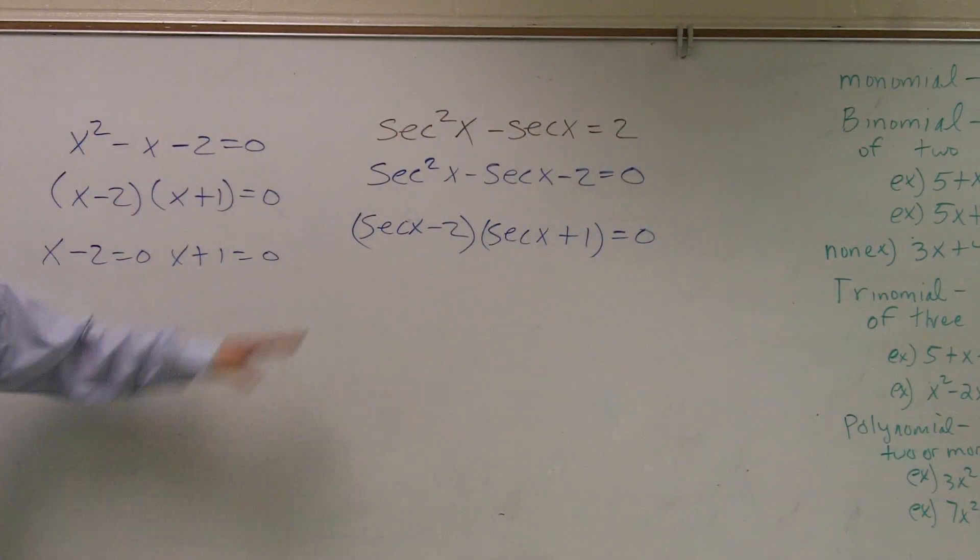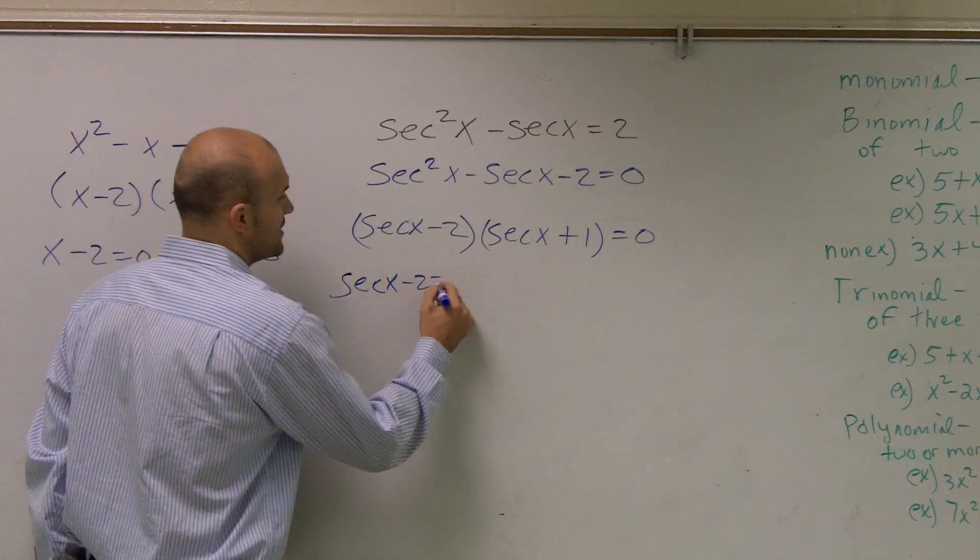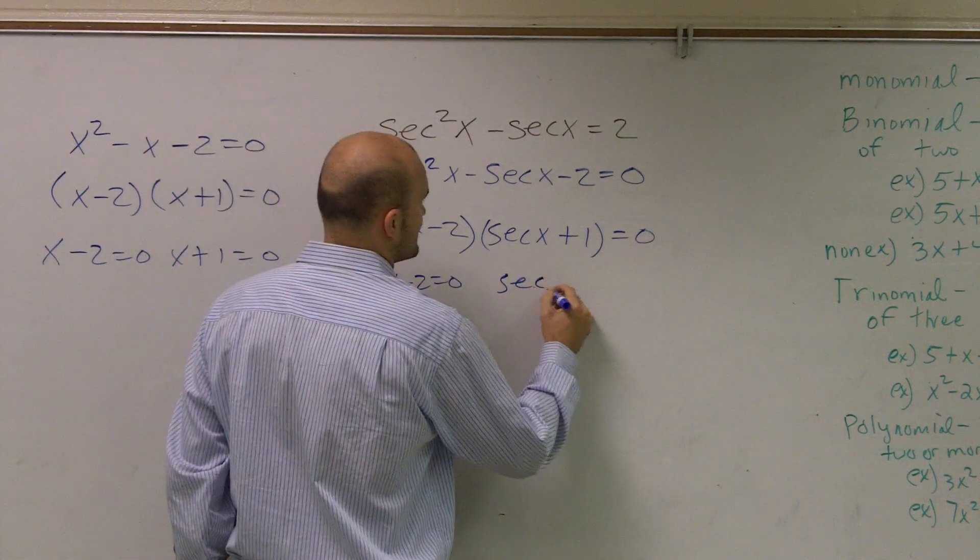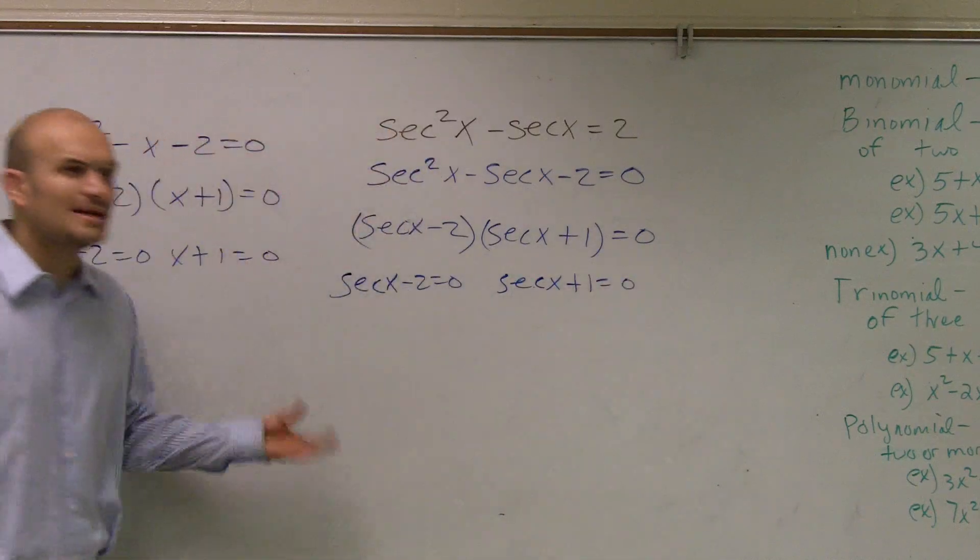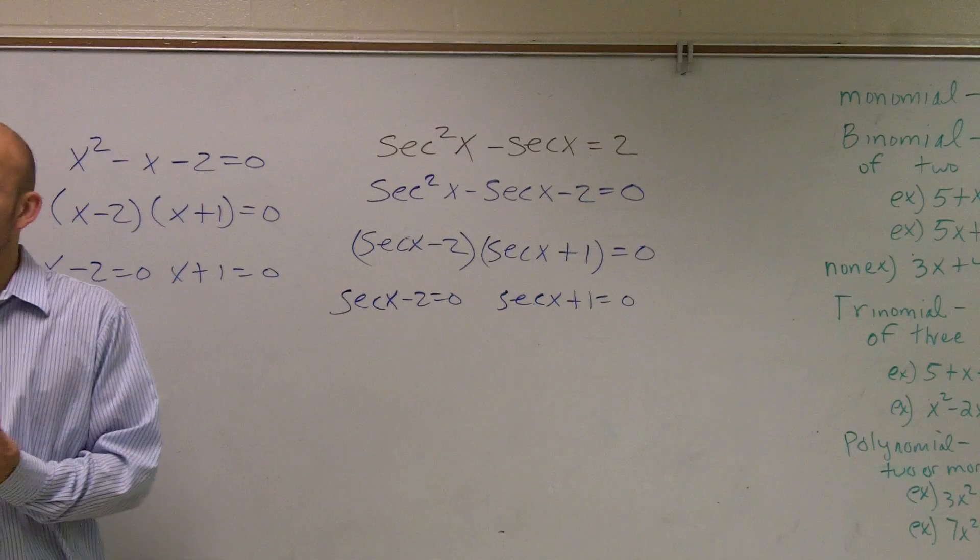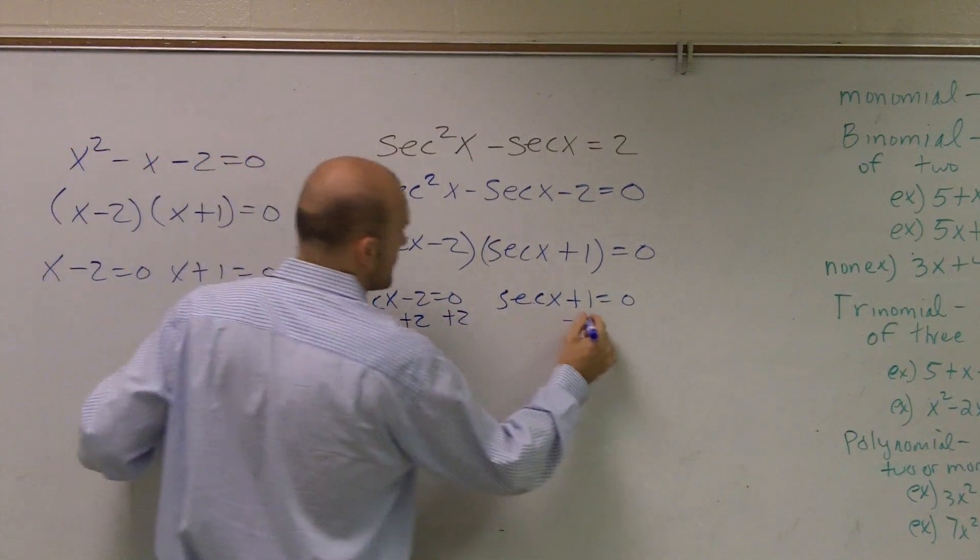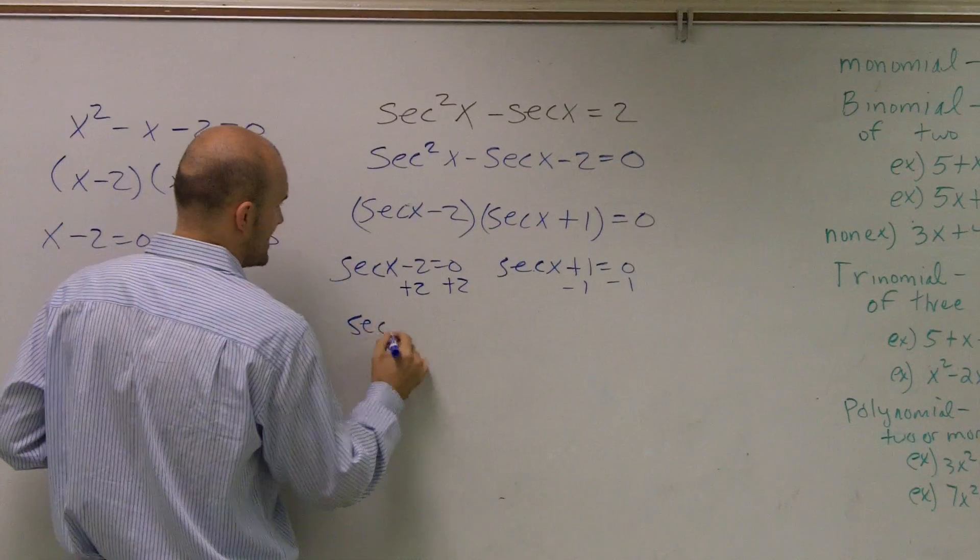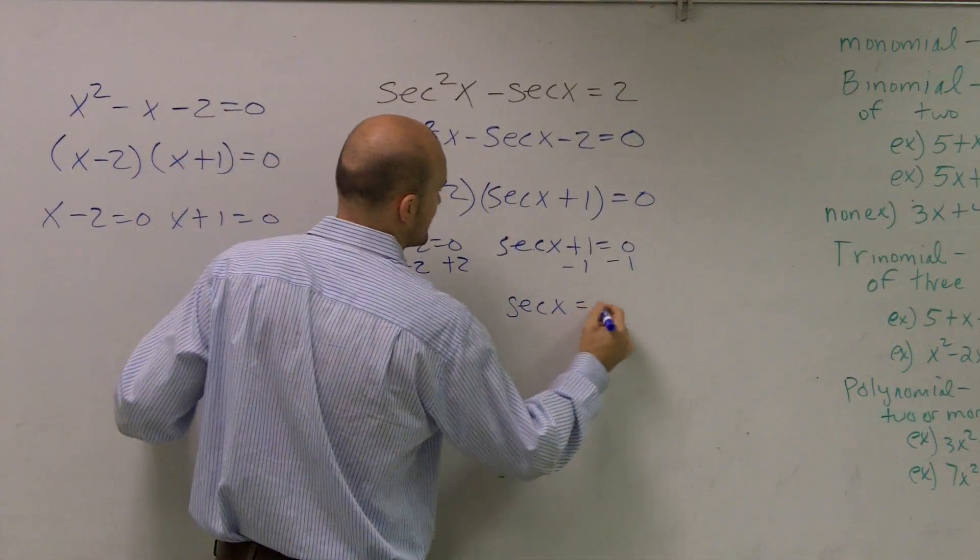So now what I want to do is I want to set them both equal to 0. So I have secant of x minus 2 equals 0, and secant of x plus 1 equals 0. But ladies and gentlemen, when we're trying to find our values for secant, it's very difficult for us to figure out what secant is. Let me solve this first before I go into that. So I have secant of x equals positive 2, and secant of x equals negative 1.